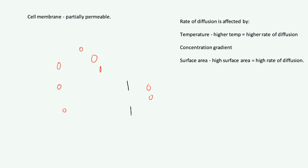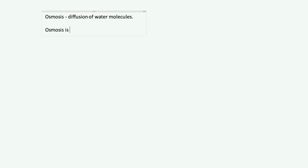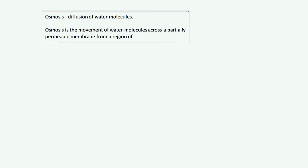Now we're going to move on to a special case of diffusion which is known as osmosis. The reason I call it a special case of diffusion is because that's pretty much exactly what it is. Osmosis is basically the diffusion of water molecules — the movement of water molecules across a partially permeable membrane from a region of higher water concentration to a region of lower water concentration.